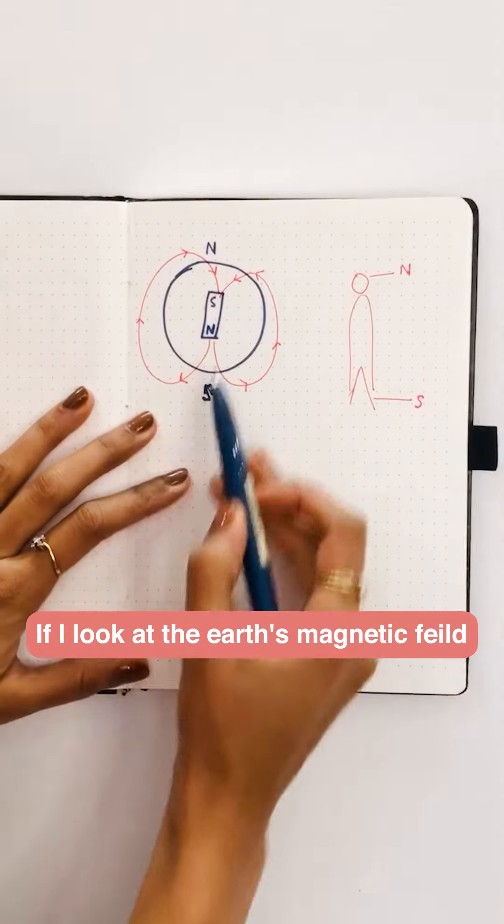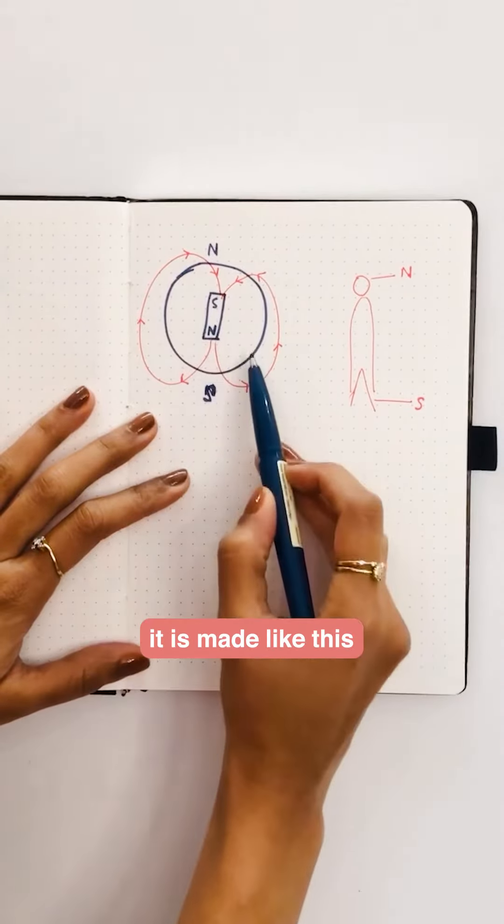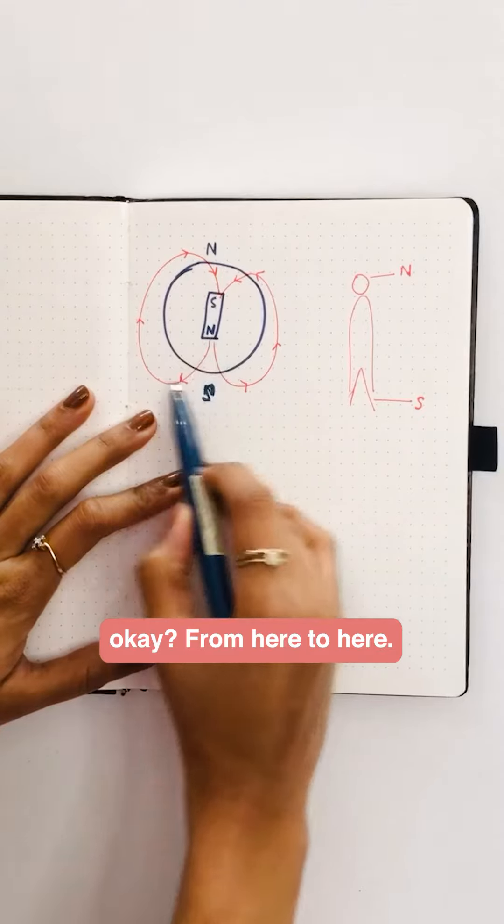See, if I look at the earth's magnetic field, it is moving like this. From here to here.